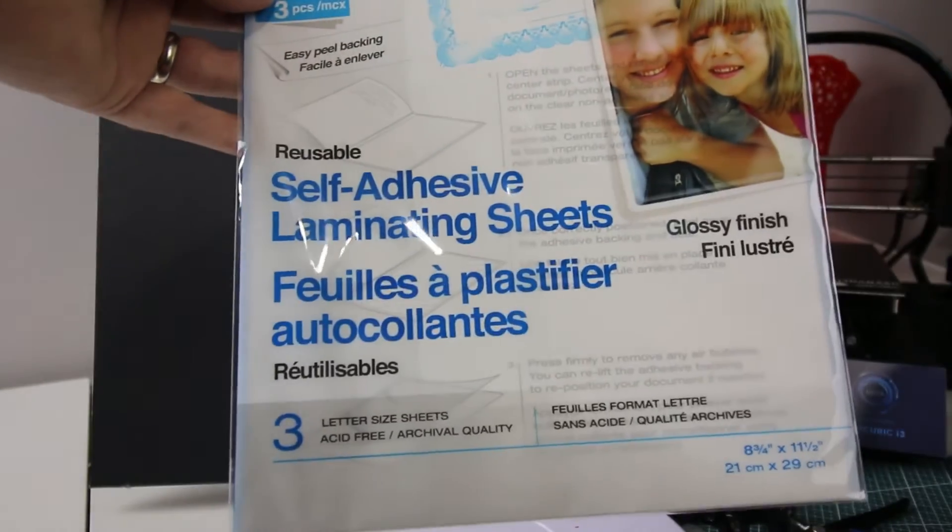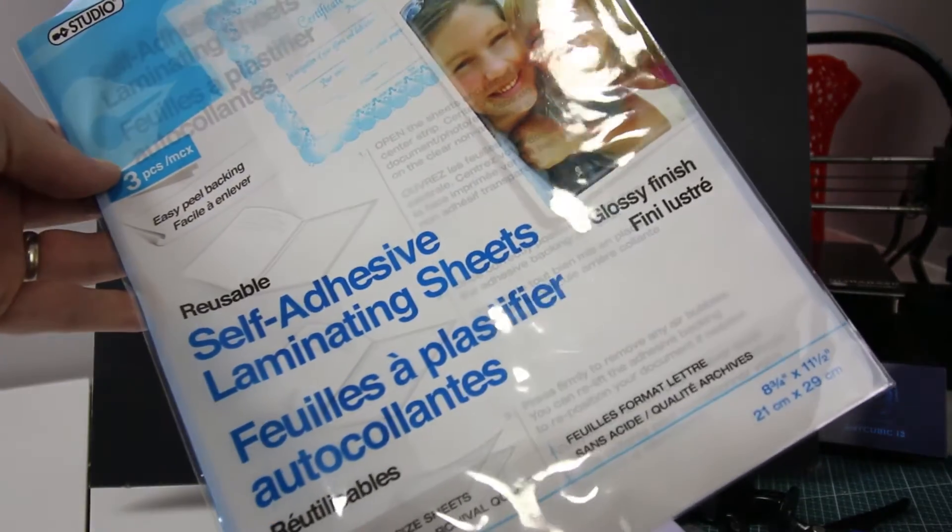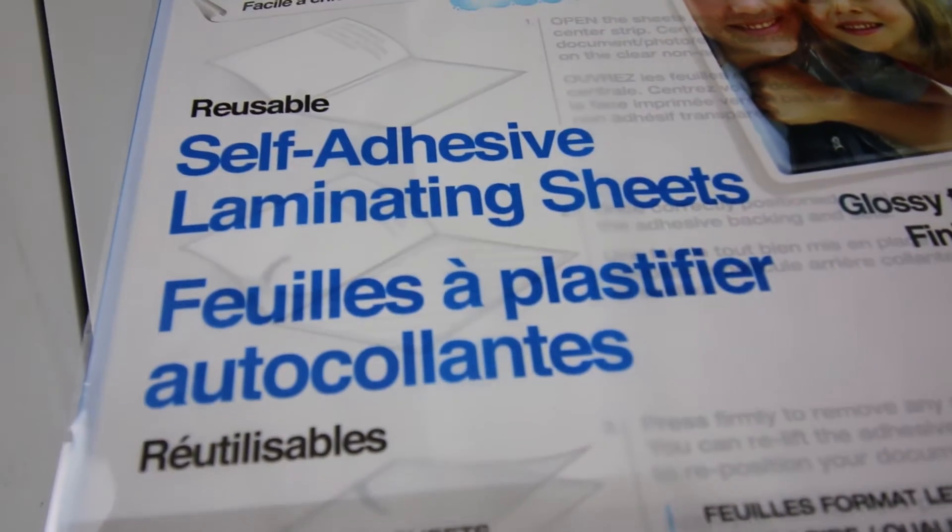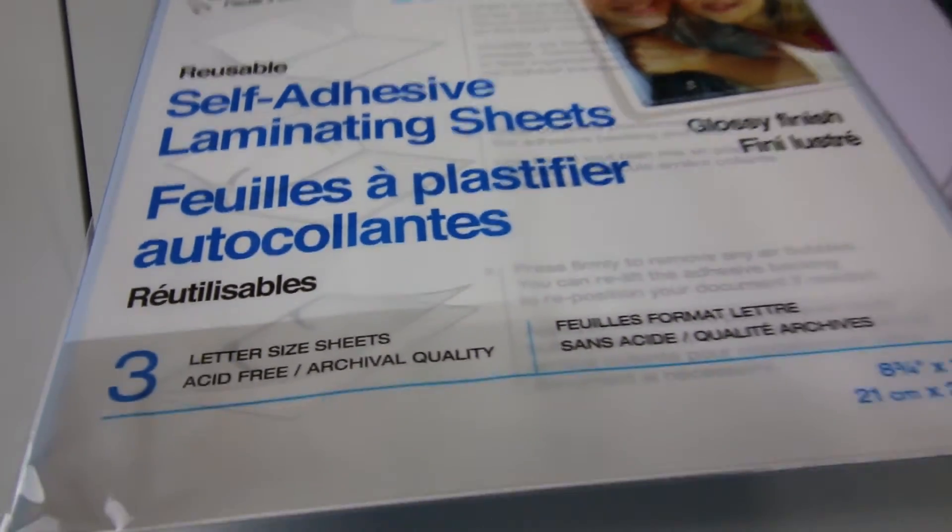With things under quarantine I did what any good maker would do. I went raiding through my office cupboards and found these self-adhesive laminating sheets. And I thought well that might just do the trick. But only use one half of it. One side is a little thicker than the other.